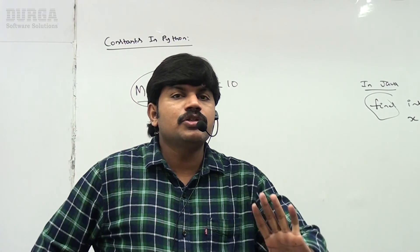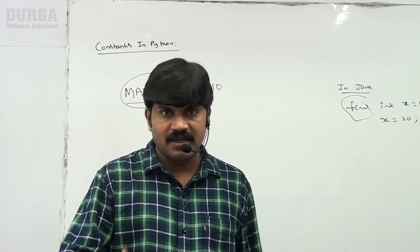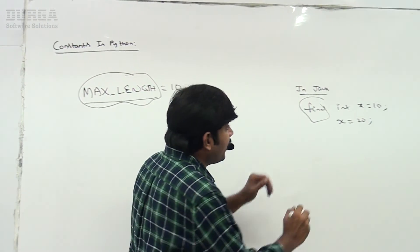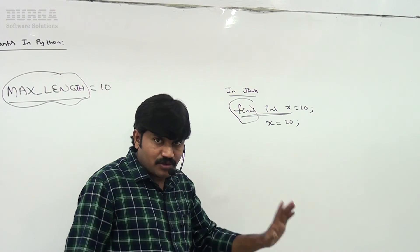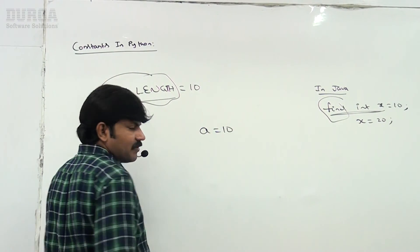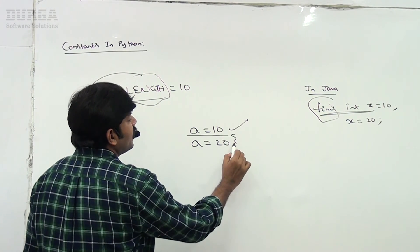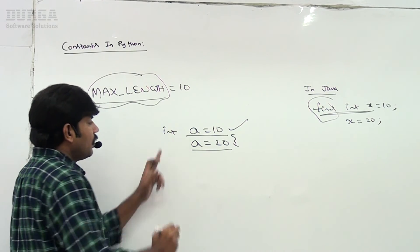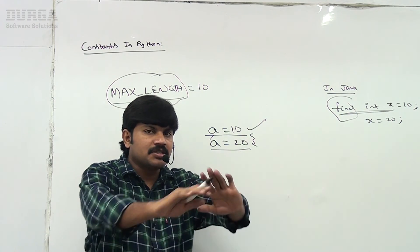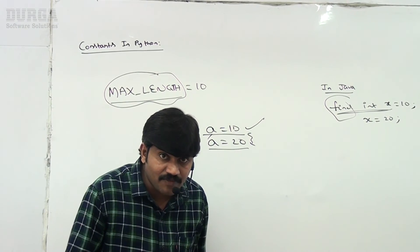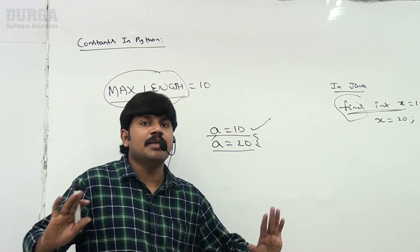Constants concept is not applicable in Python because there is no variable declaration syntax. In Python, a = 10, then a = 20 — that's all. There is no type declaration. So the constants concept cannot be defined in Python. Just be aware: constant concept is not applicable in Python.